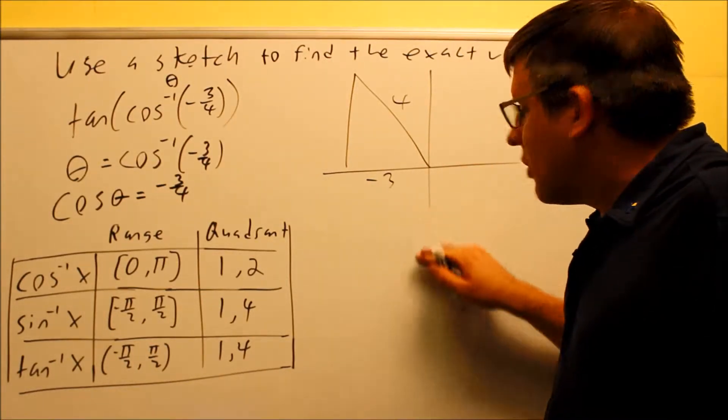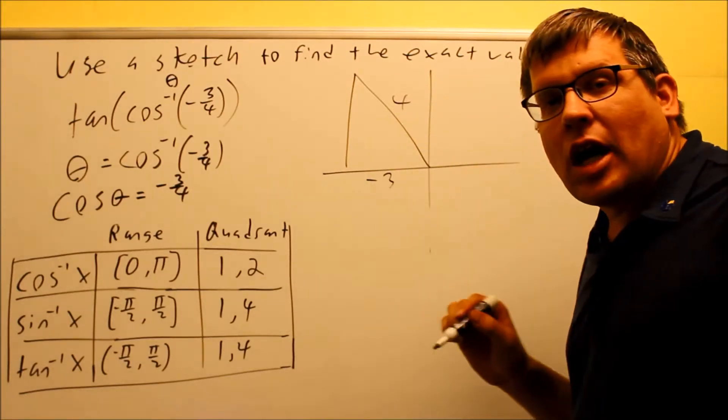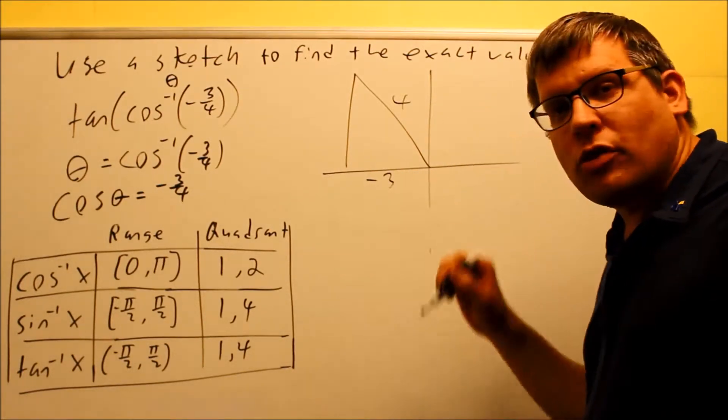Now be careful, this is not going to be this three, four, five triangle because the five would have to be in the hypotenuse position there. So it won't be three, four, five.